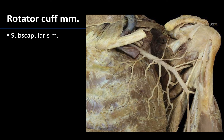The anterior rotator cuff muscle is the subscapularis, which you can see deep in this region, deep to the subclavian and the axillary artery. Its belly covers the anterior side of the scapula and its distal tendon forms part of the rotator cuff surrounding the shoulder joint. In this region it's difficult to differentiate between what is tendon and what is capsule.